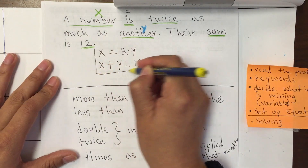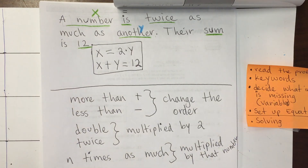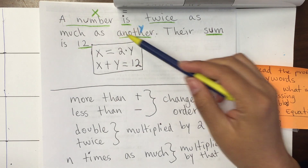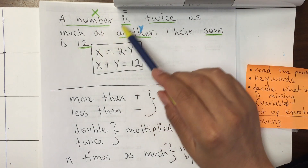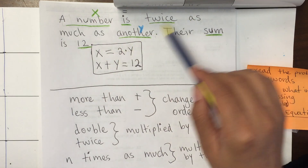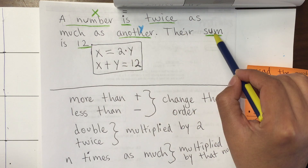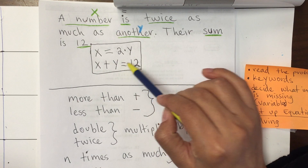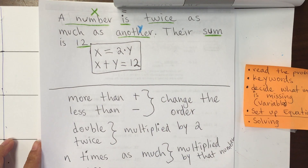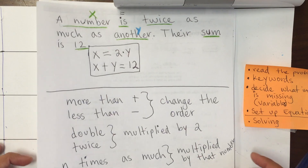So that's how you do it — just reading the problem. If you want, rewind so you can hear the explanation again and see that it's not that complicated. A number is twice another: X = 2Y. Their sum means the sum of the two numbers, X and Y, equals 12: X + Y = 12. Very simple.